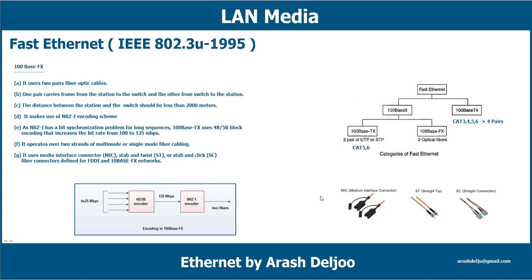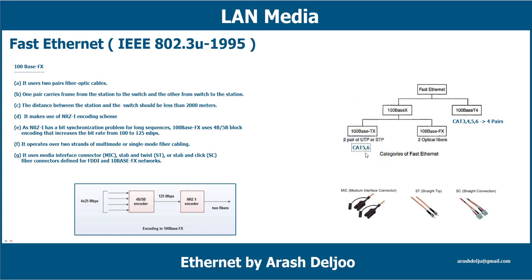Now we know the different categories of Fast Ethernet: 100Base-X includes 100Base-TX over copper cable and 100Base-FX over fiber optic cable, plus 100Base-T4. The most commonly implemented standard among these is 100Base-TX, used with an RJ-45 connector, which was the most widely deployed category of Fast Ethernet.